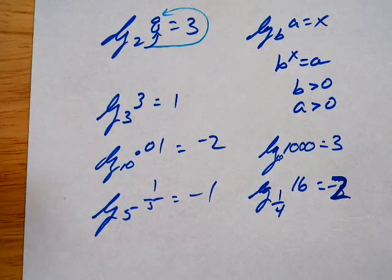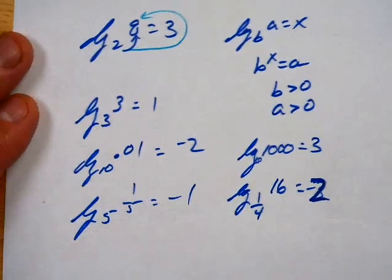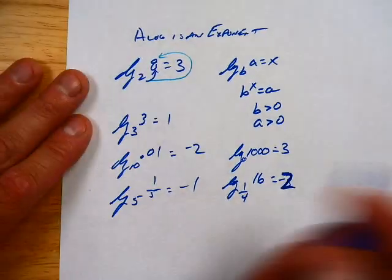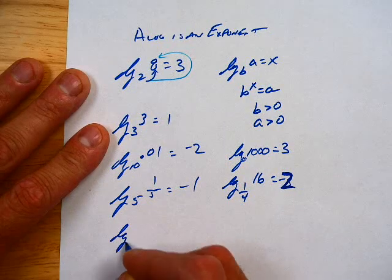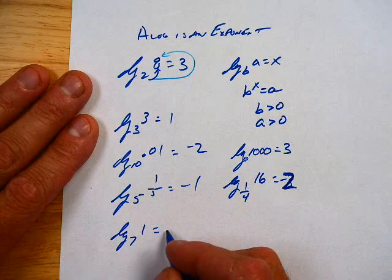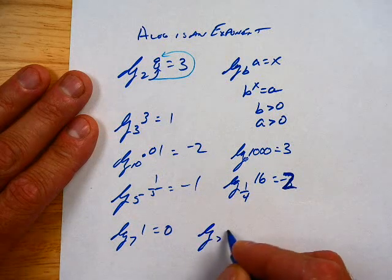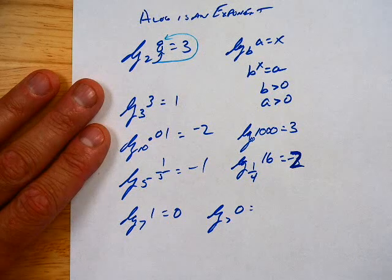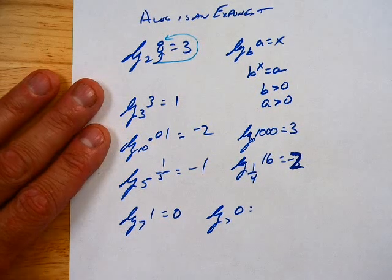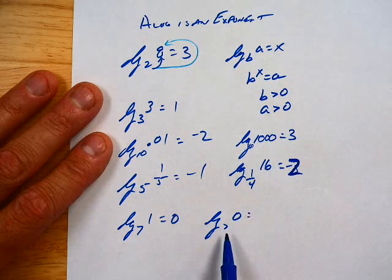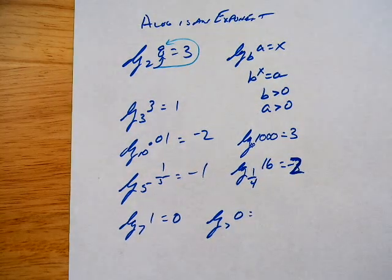Like, you can hopefully see, and we're going to come back and practice this just a little bit more. Well, actually, let's do this right now. Log base 7 of 1. Zero. Log base 7 of 0. Yeah. Can't do it. We've already established that B's got to be greater than 0. A's got to be greater than 0.